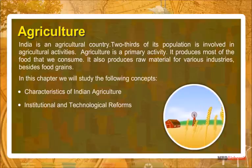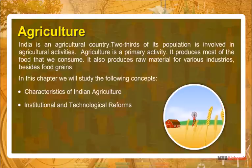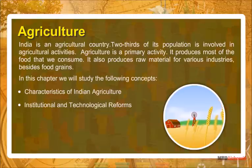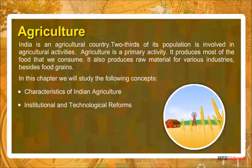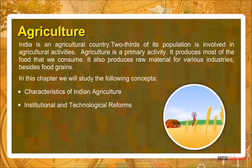India is an agricultural country. Two-thirds of its population is involved in agricultural activities. Agriculture is a primary activity. It produces most of the food that we consume, and also produces raw material for various industries besides food grains.